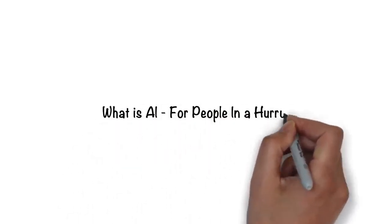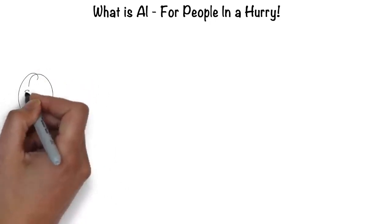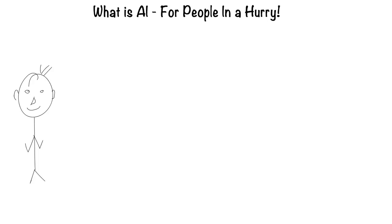Artificial intelligence for people in a hurry. The easiest way to think about artificial intelligence is in the context of a human. After all, humans are the most intelligent creatures we know of.